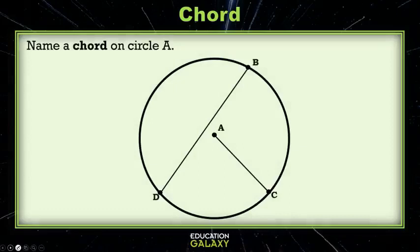So let's see. We want to name a chord on circle A. Well, AC can't be a chord because A is not on the circle. It's in the middle. But BD can be a chord. And the way we would write a chord, since it's a line segment, is line segment BD. There, we have a chord.